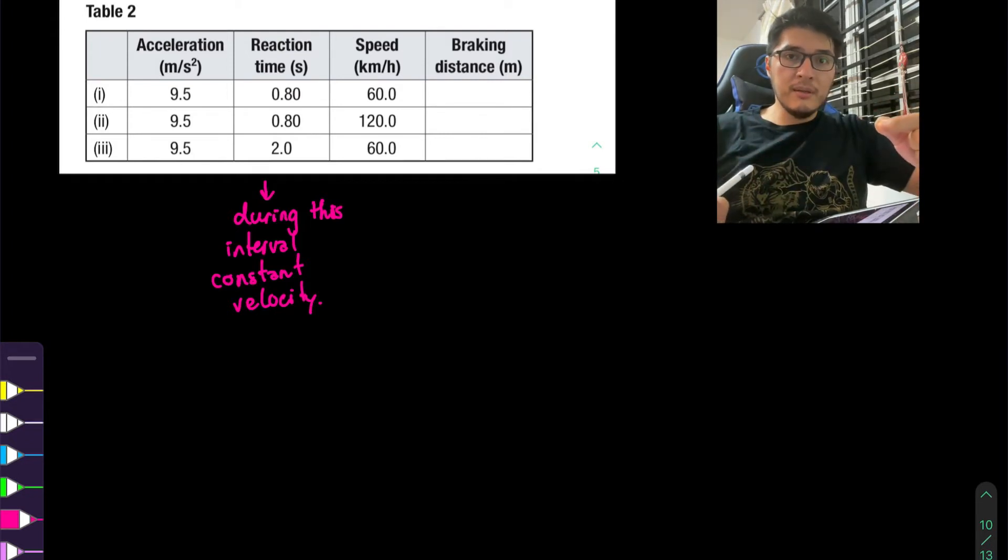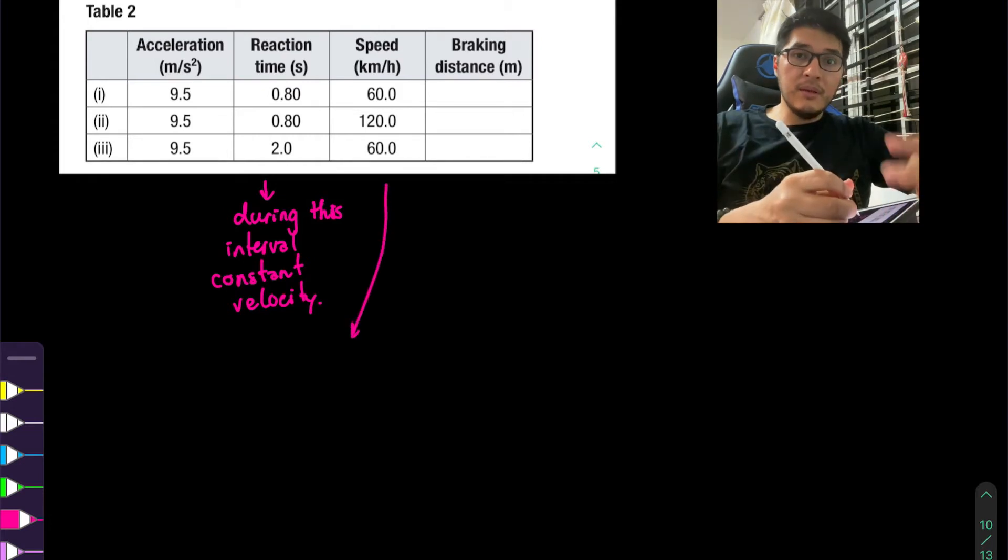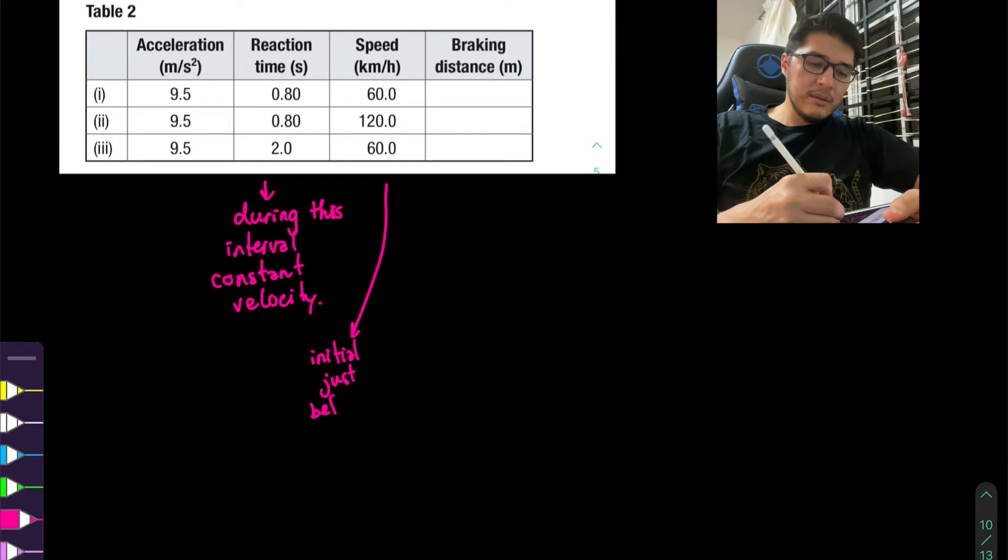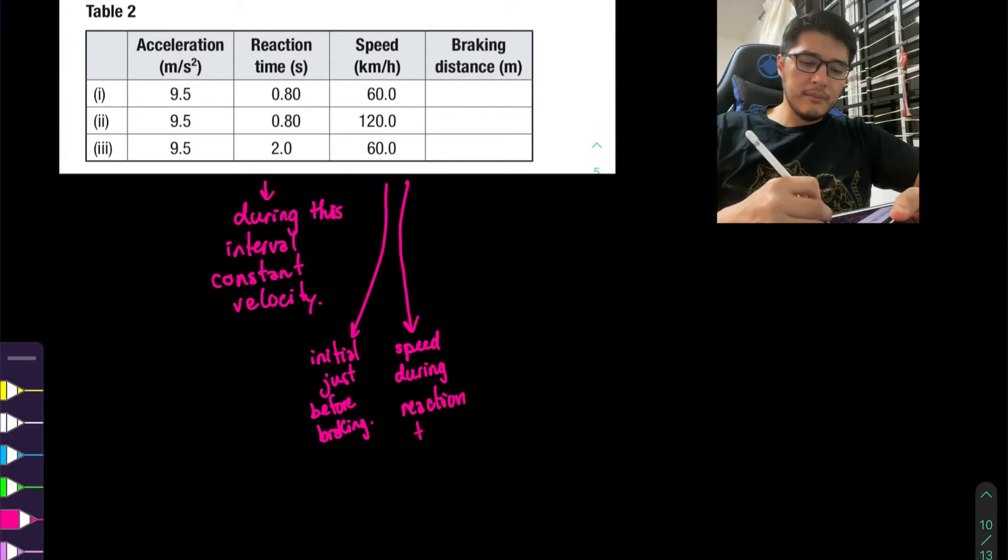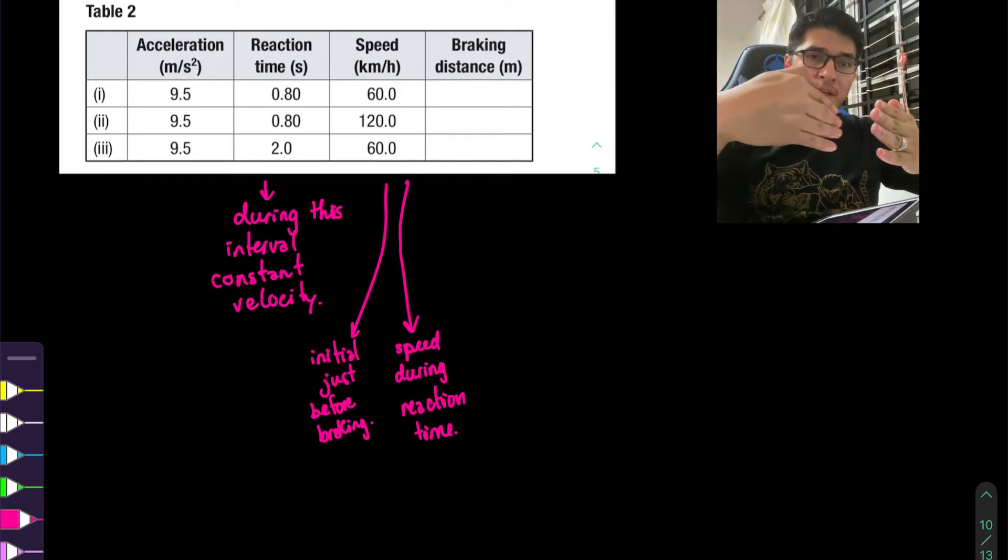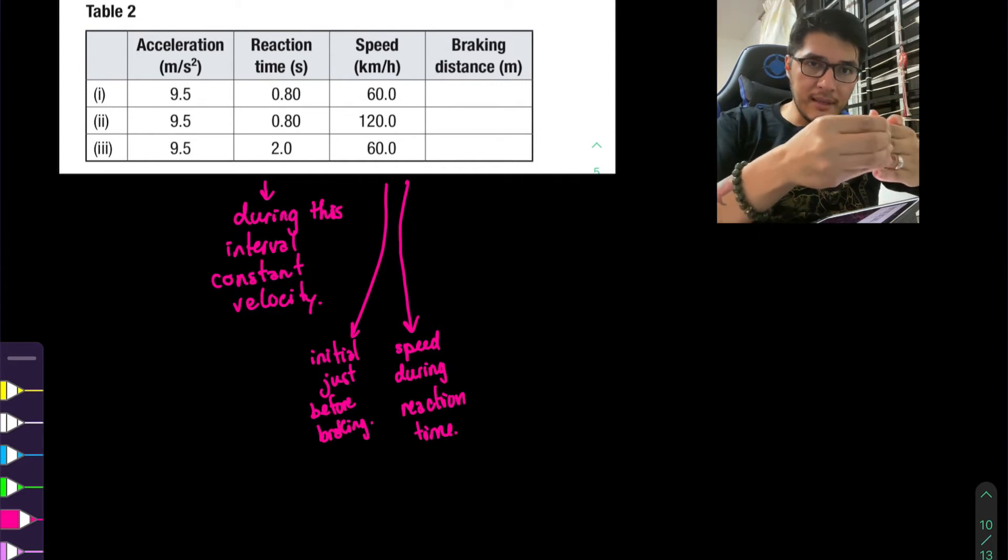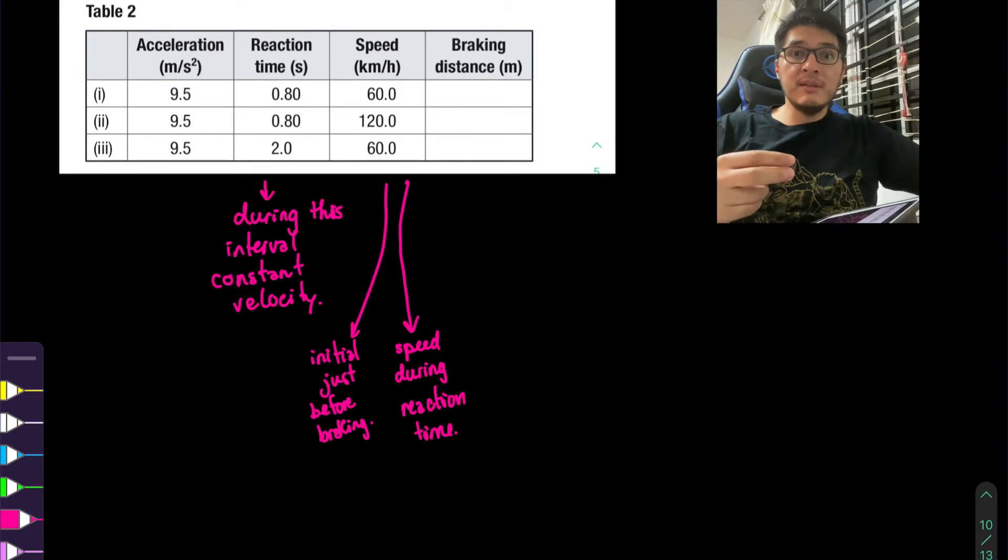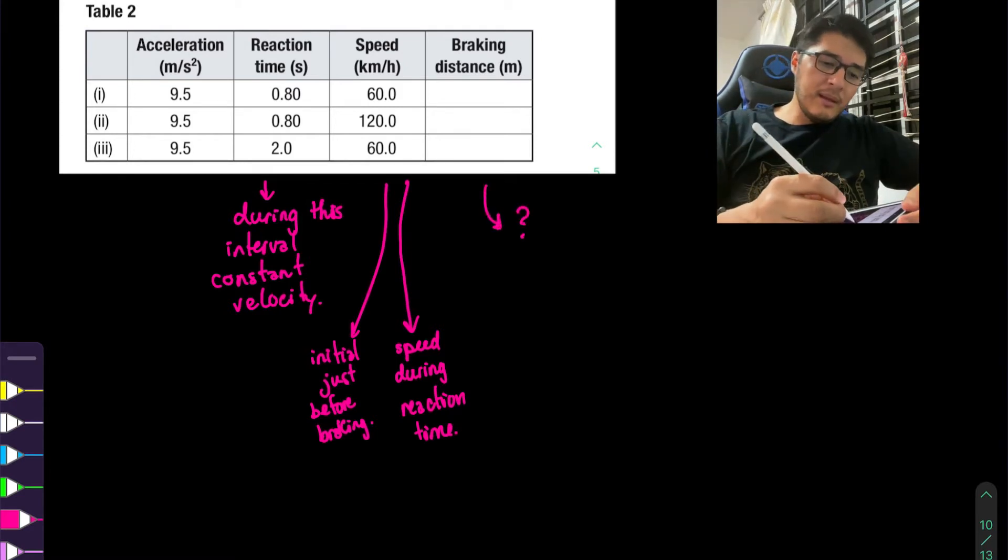And the speed, that's going to be the speed that it has during this reaction time. And this speed will also be the initial speed that the car is going to have before it undergoes the acceleration of slowing down. So this is going to be used twice. So this is the initial speed just before braking. So imagine it's driving along, reaction time, and during this reaction time, the speed doesn't change. Once you start to accelerate, the initial speed is the one that you had from before. So that's why I'm saying this speed value is going to be used twice.